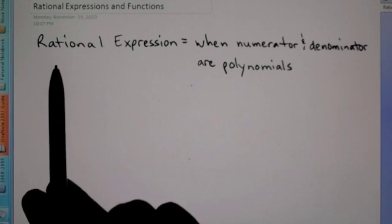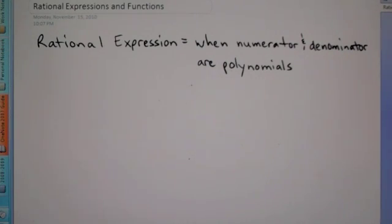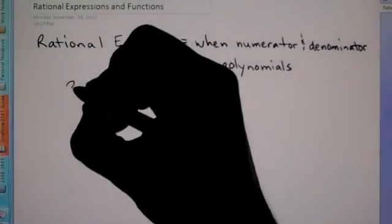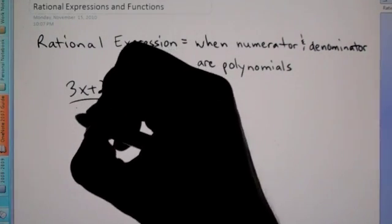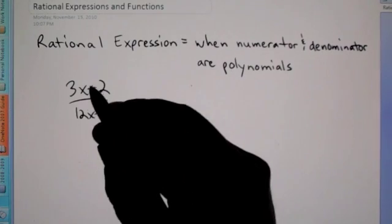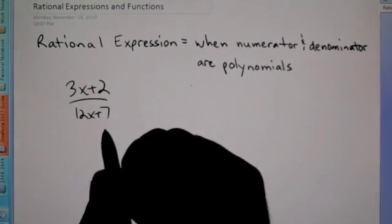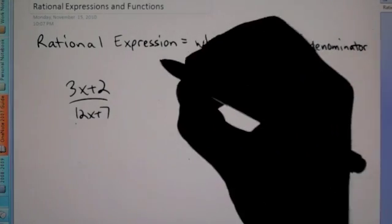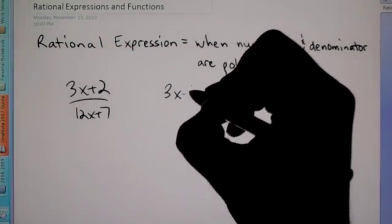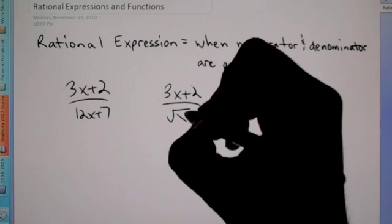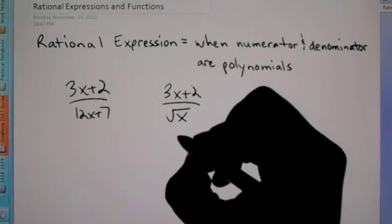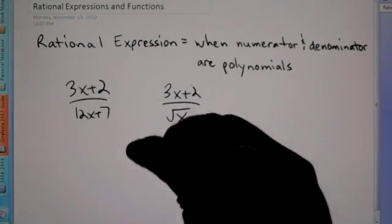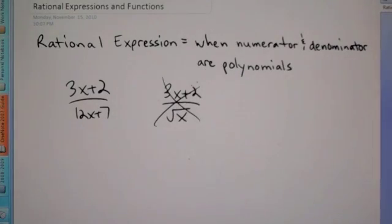A rational expression is when the numerator and the denominator are both polynomials. An example would be (3x + 2) over (12x + 7) — notice both are polynomials. An example of something that wouldn't be a rational expression would be (3x + 2) over the square root of x, because the square root of x is not a polynomial, so that is not a rational expression.